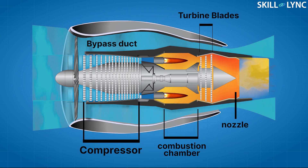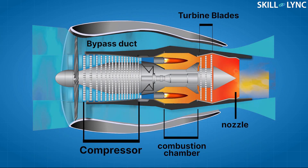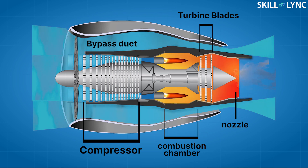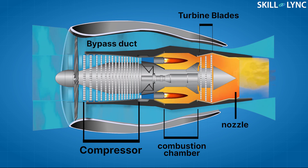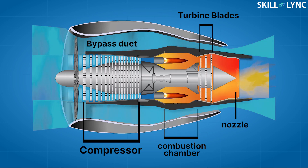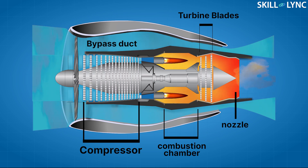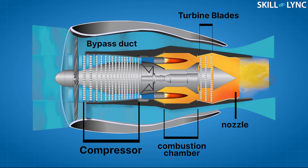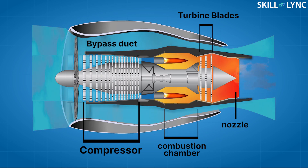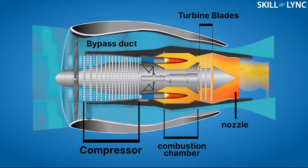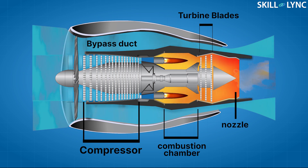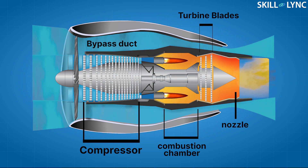The working of the turbofan engine is very similar to the turbojet engine. The incoming air is captured by the engine inlet. Some of the incoming air passes through the fan and continues on into the core compressor, where it is compressed to very high ratios.